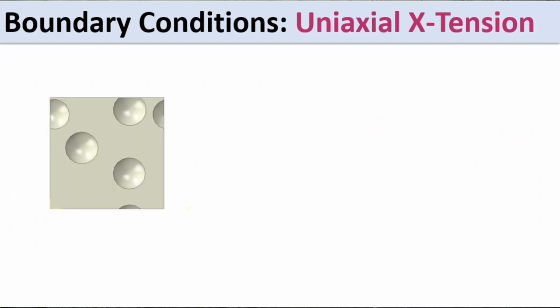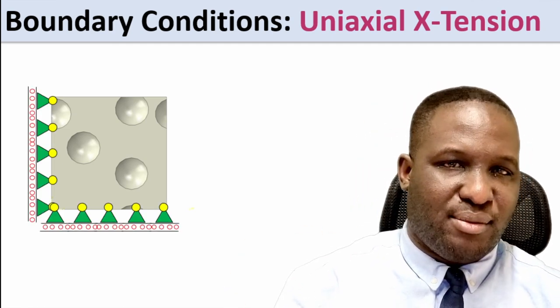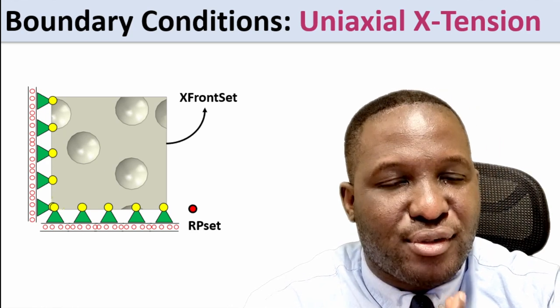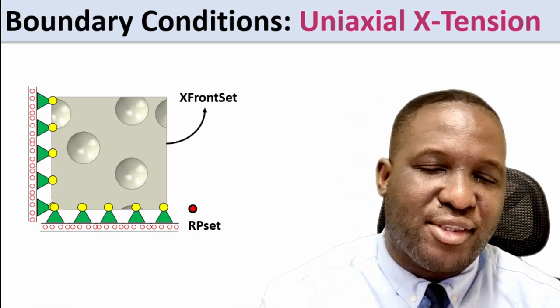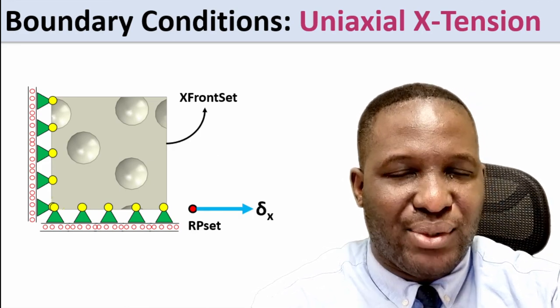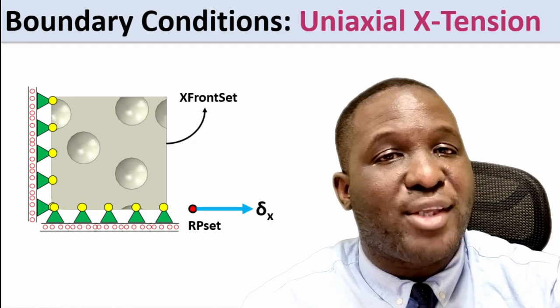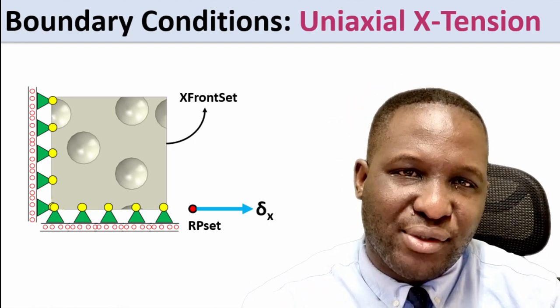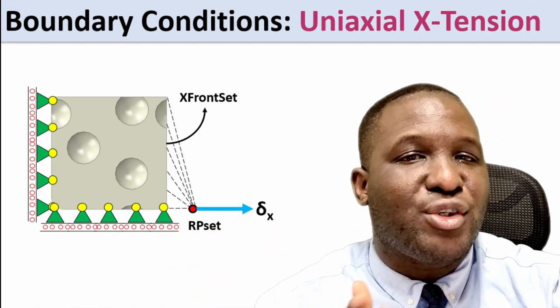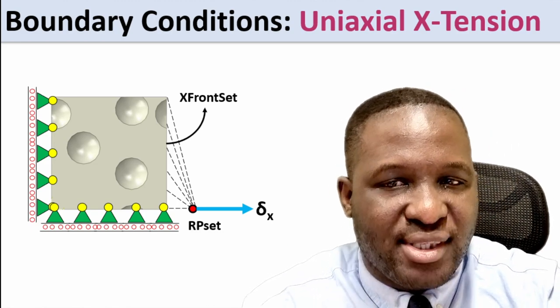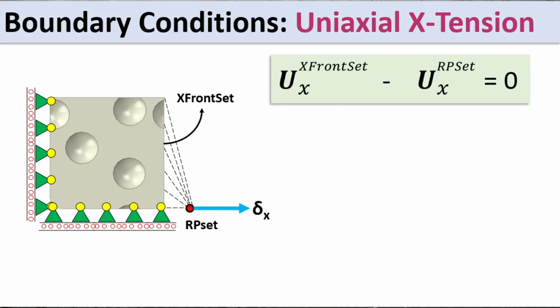For the uniaxial tensile boundary condition, we pin the back face and use a roller support to create uniaxial deformation. We create a set called the X-front set and a reference point placed away from the material. Displacement loading is applied on that reference point. A constraint equation is needed to connect the reference point to the X-front face, so that every load applied transfers to it.